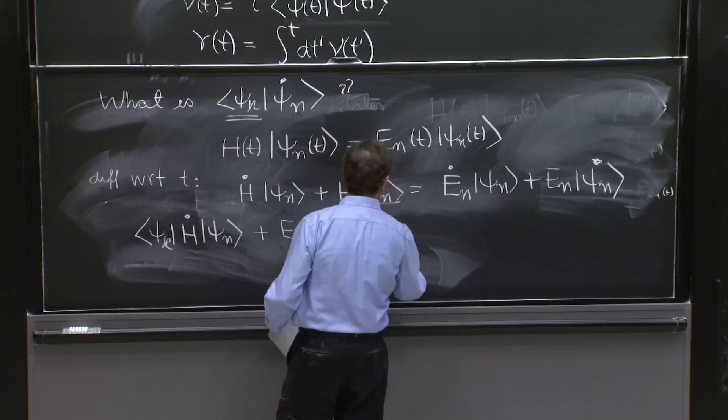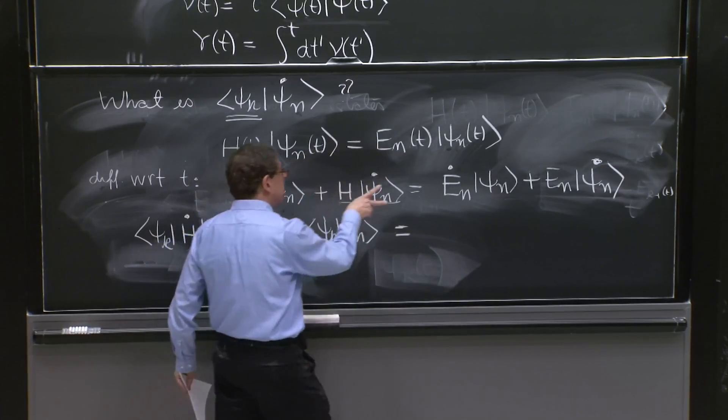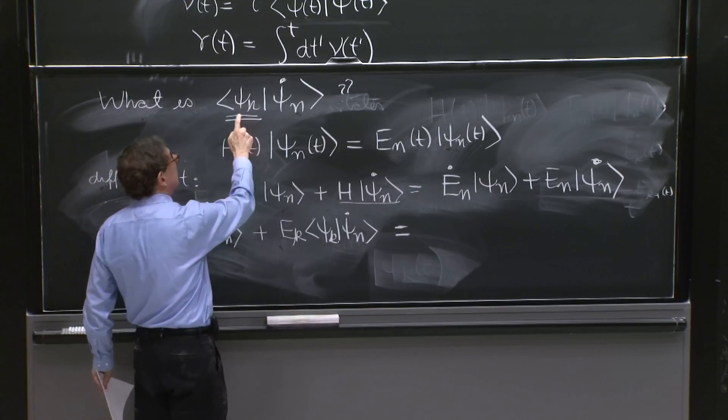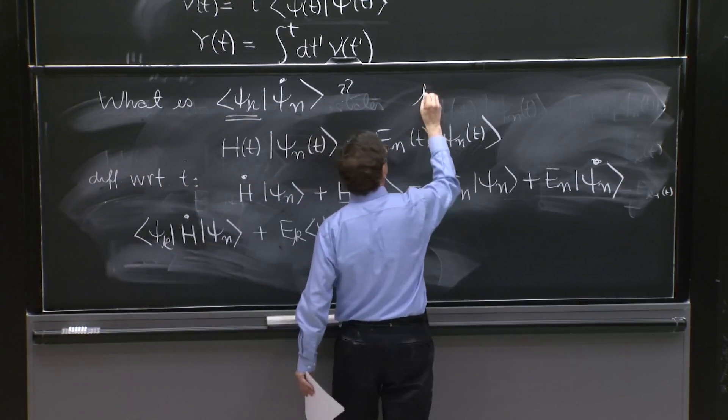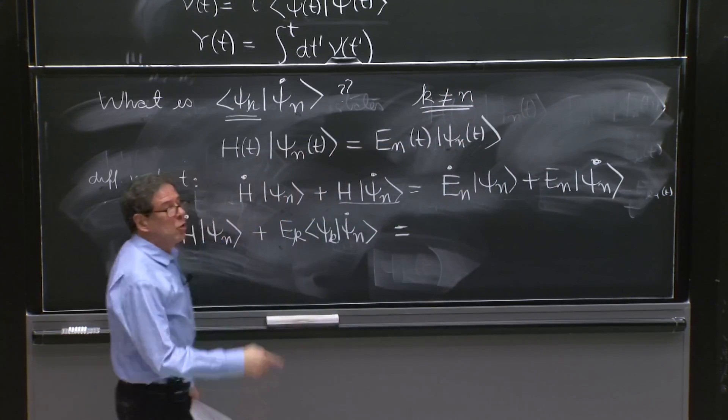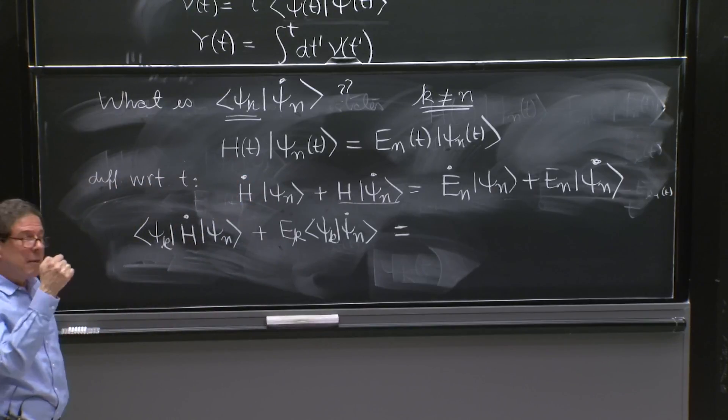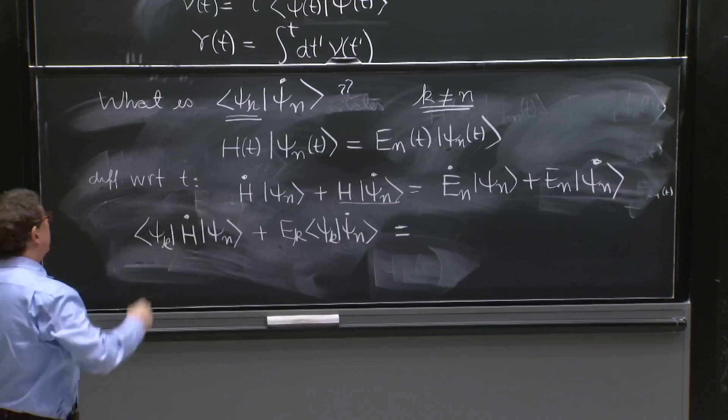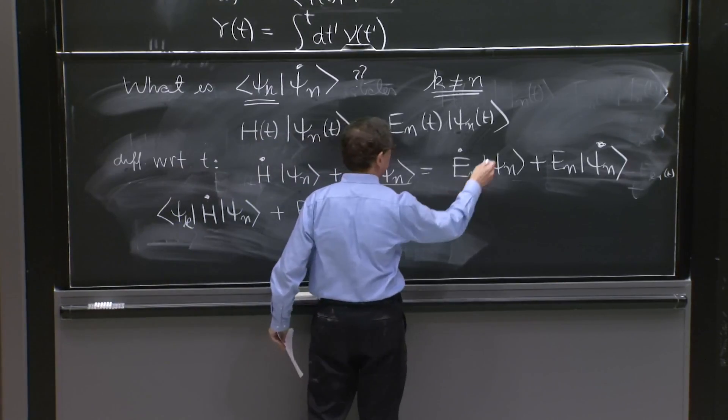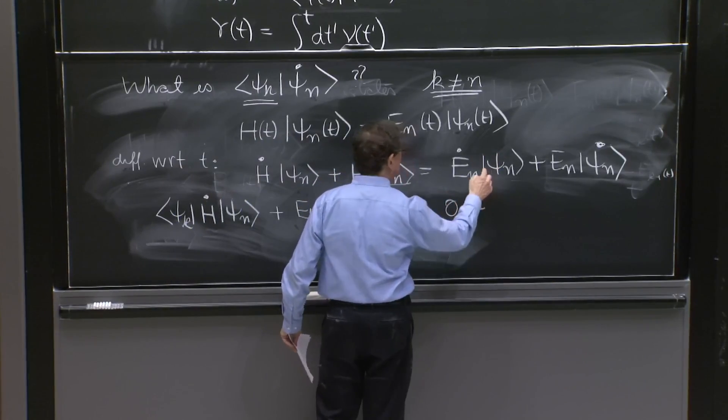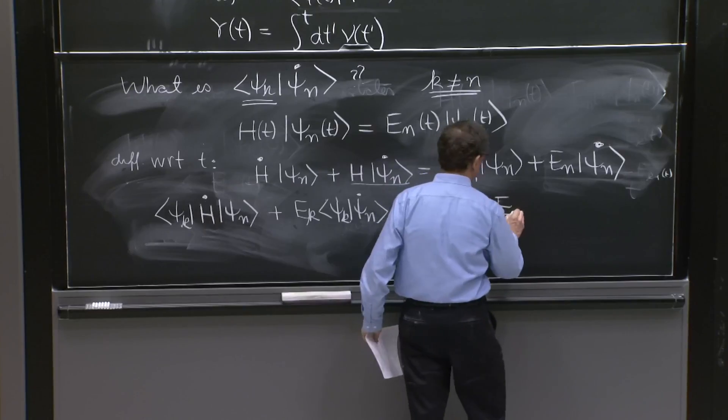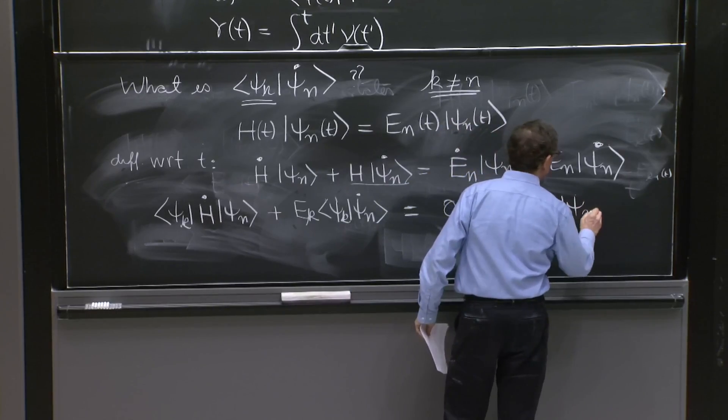On this state, I have the psi_k already hitting the psi_n. Now, we are interested in this term when k is different from n. These are the couplings to other states in the analysis of the adiabatic approximation. So let's take k different from n, in which case this term will give 0 because k is different from n and the state just hits it. And here we have finally e_n times psi_k psi_n dot.